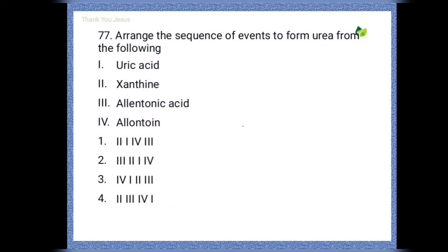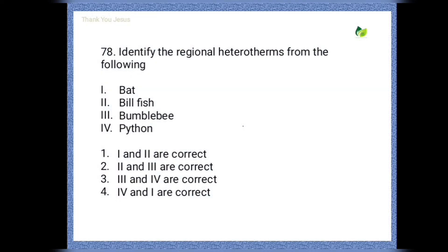Next question: arrange the sequence of events to form urea from the following. The correct answer is the first one. The sequence is: xanthine, uric acid, allantoin, allantoic acid.